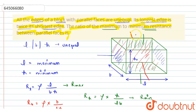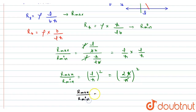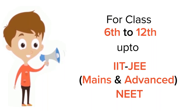Now, one more condition from the question: the longest edge is twice its shortest edge. Since l is maximum and h is minimum, we have l = 2h. Substituting: R_max / R_min = (2h/h)² = 2² = 4. So the final answer is R_max / R_min = 4.